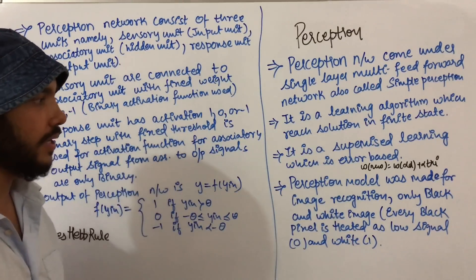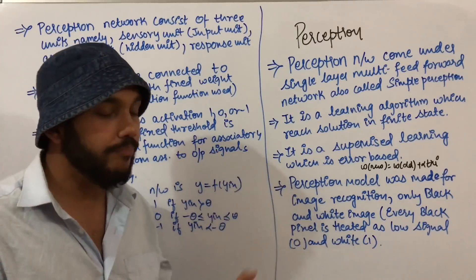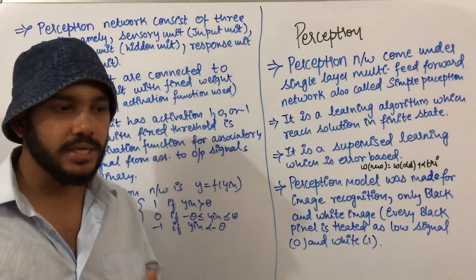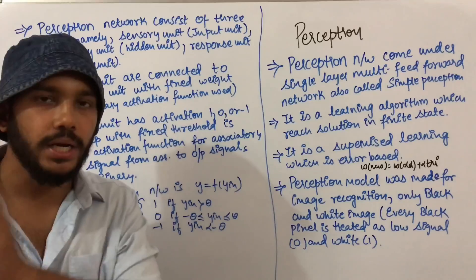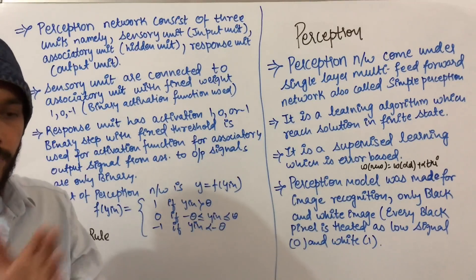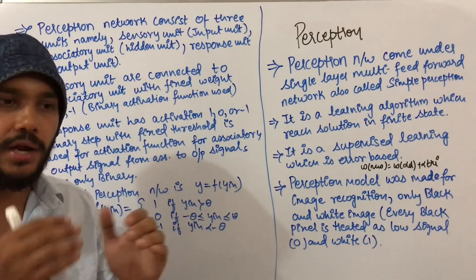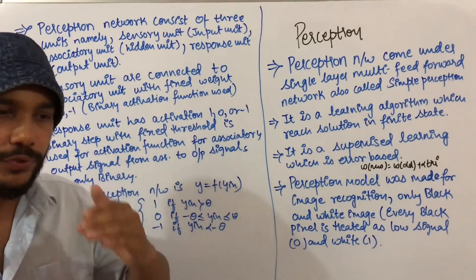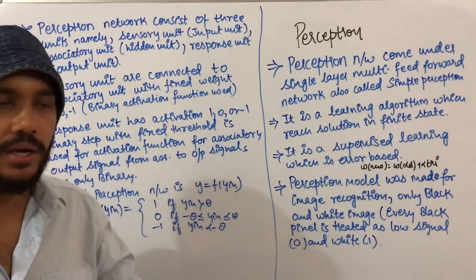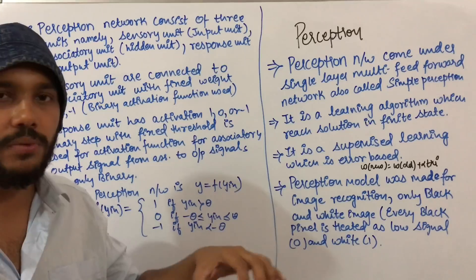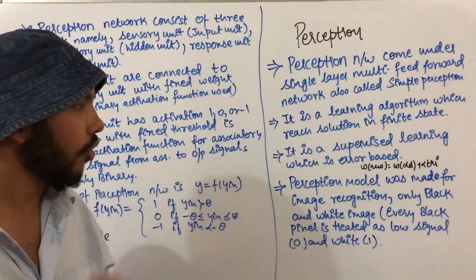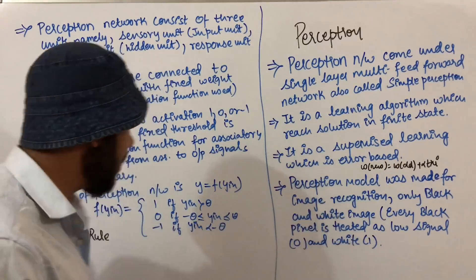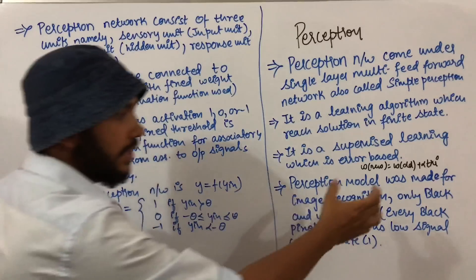This is a supervised learning algorithm which is error-based. The weight is calculated from the given signals, then compared with the actual output. The error present is removed over a few steps, and when all the error is finally removed we reach the correct output. Weight update happens using the Hebb rule.